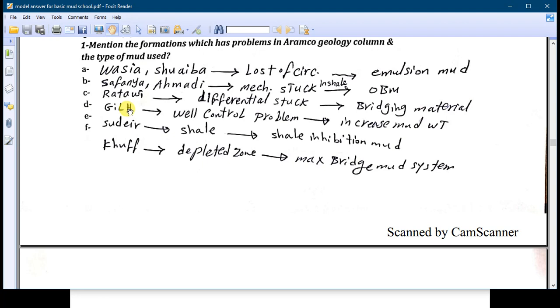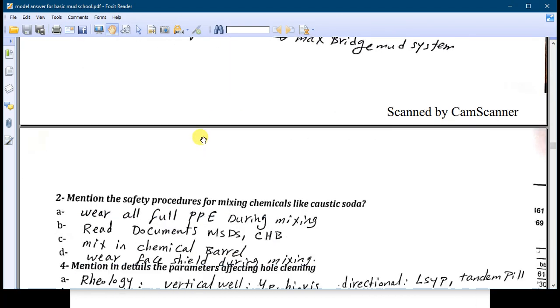Number D: Jubaila. Jubaila is very hard to drill and so there you face a well control problem because the flow is very high. It is mainly dolomite and you increase that mud weight. You have to increase the mud weight until you kill the well. Number E: Hith. Hith formation is a depleted zone, so you use bridging material like for example MaxBridge or HydroGuard systems for it.